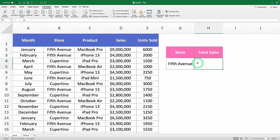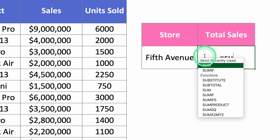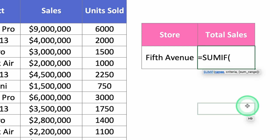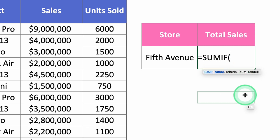Start by typing "=SUMIF" to open up your formula. This friendly function only asks for three things. First, it'll ask you for the range. This is crucial — it's not yet asking you for the range you want to sum up. It's asking for the range you want to evaluate with a condition. In this case, you want to evaluate the store name.